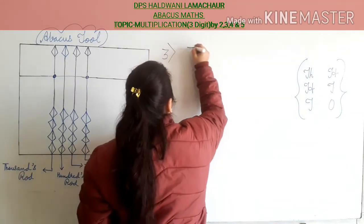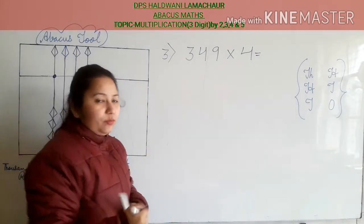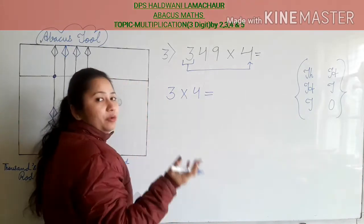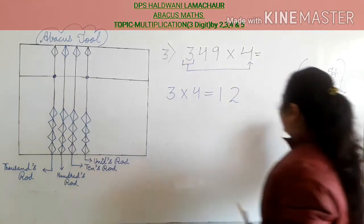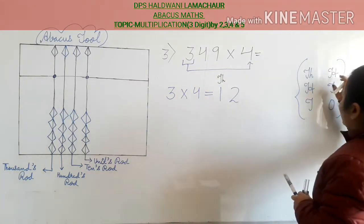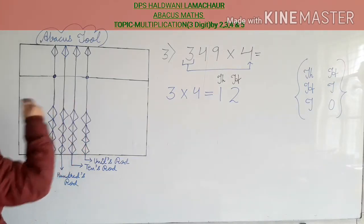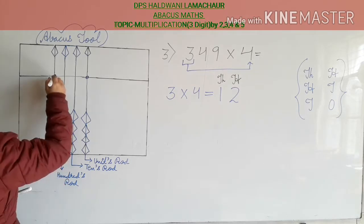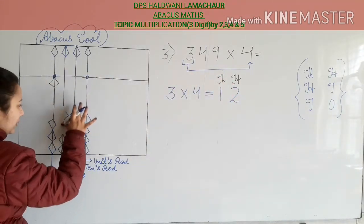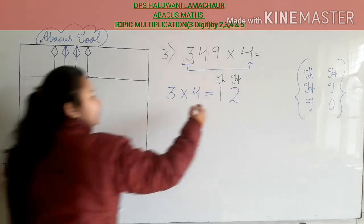The third sum is 349 multiplied by 4. As you know, we will multiply each digit with 4. First: 3 into 4 is 12. According to the pattern, the first digit goes in thousands rod and the second digit goes in hundreds rod. Put 1 bead up in thousands rod, and 2 beads up in hundreds rod. This is completed.